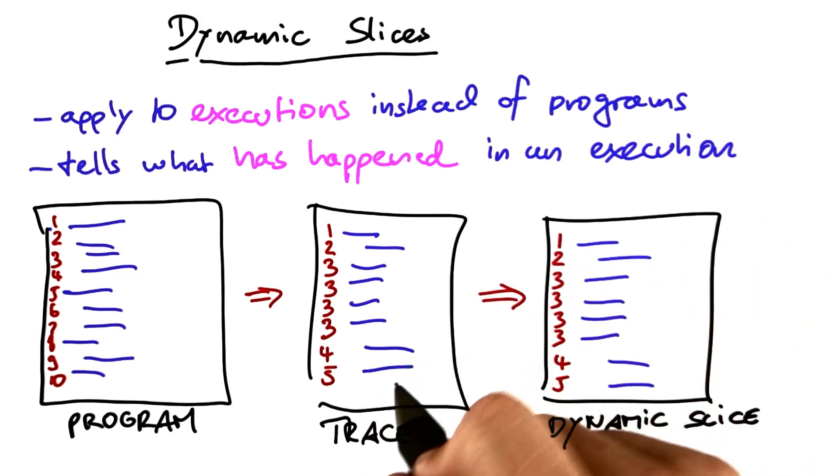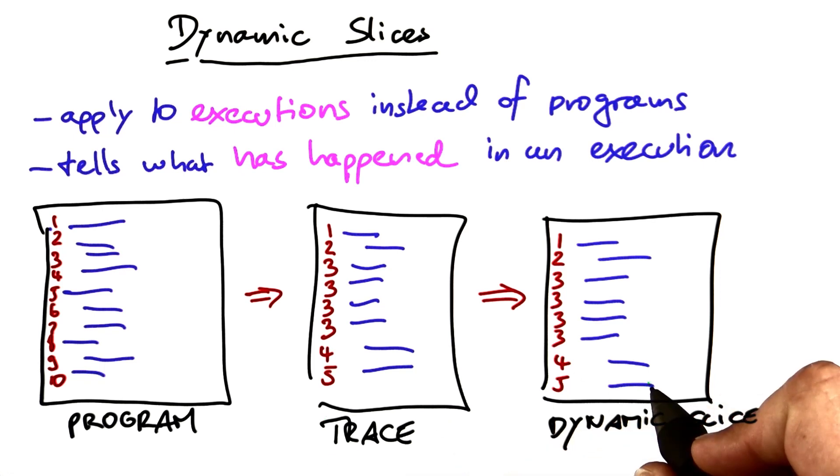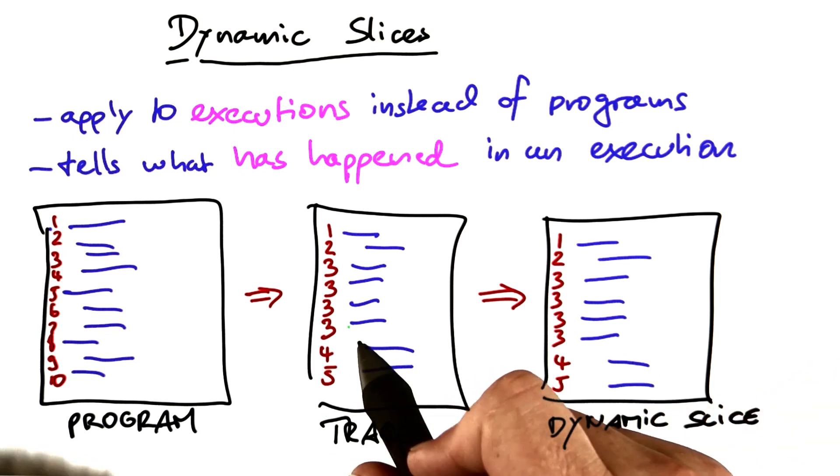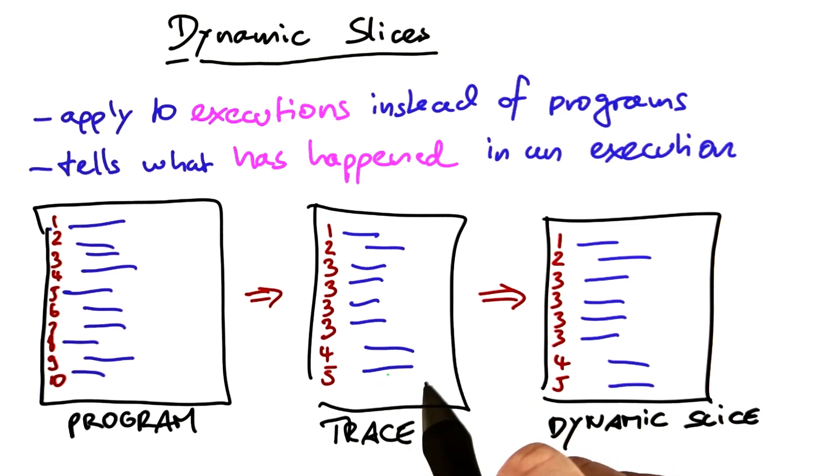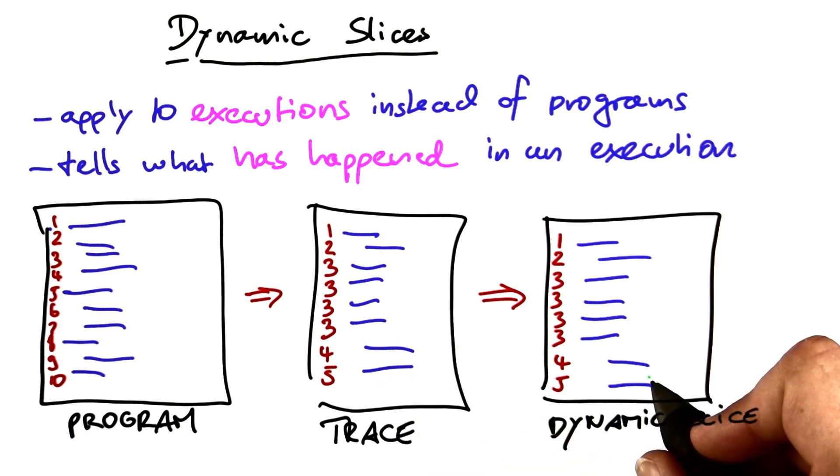Within the trace, we can now look again at dependencies. That is, looking at which variables have been read and which variables have been written.